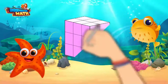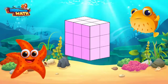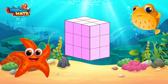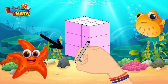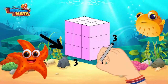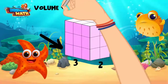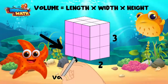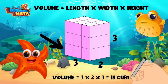Stella puts unit cubes together to make a rectangular prism. She made a base layer with a length of three and a width of two, then built it up three layers high, using 18 cubes total. The formula to calculate volume is length times width times height. The length is three, the width is two, and the height is three — three times two times three equals 18 cubic units.